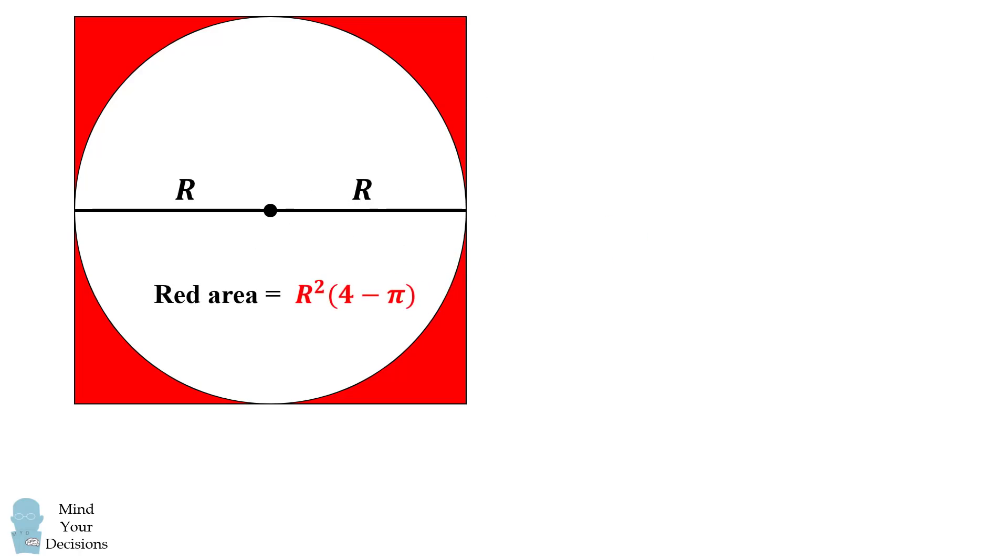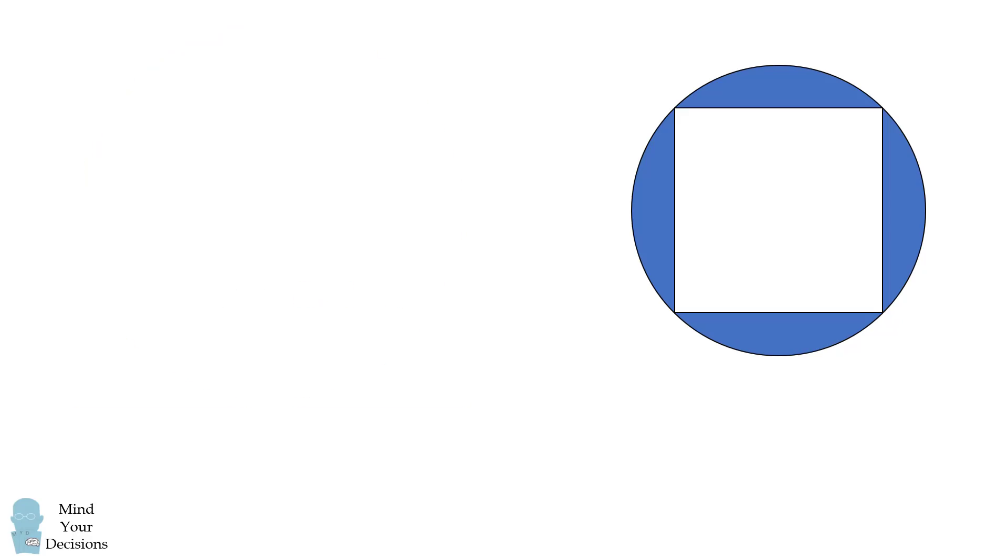So we've determined the red area, now let's determine the blue area in terms of the smaller circle's radius. We'll do the same thing. From the center of the circle, we'll draw the diameter that spans across the diagonal of the square.